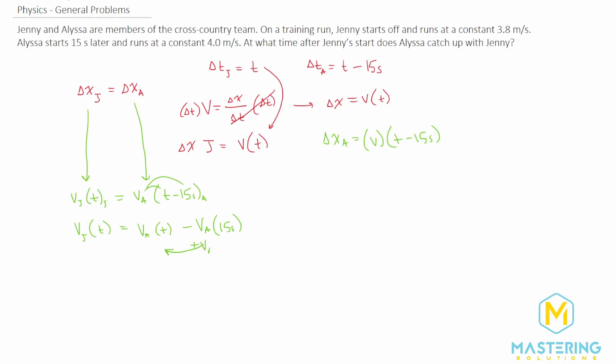If we add the velocity of Alyssa times 15 seconds, that will cancel and we'll be left with the velocity of Alyssa times time equals the velocity of Jenny times time plus velocity of Alyssa times 15 seconds. Now we can subtract this over.